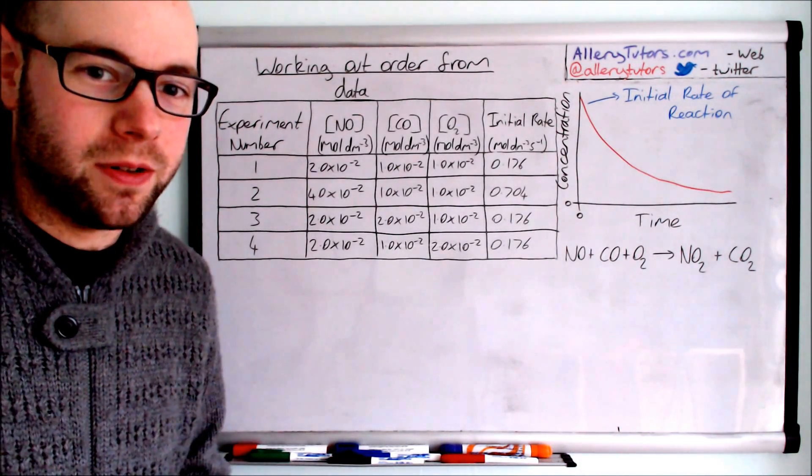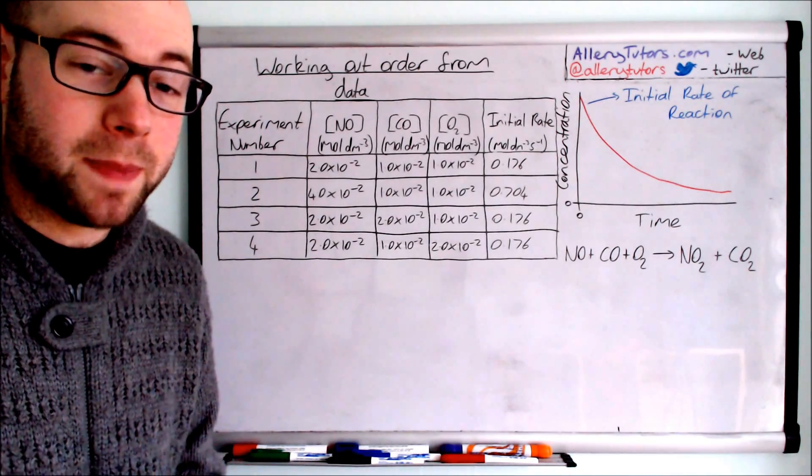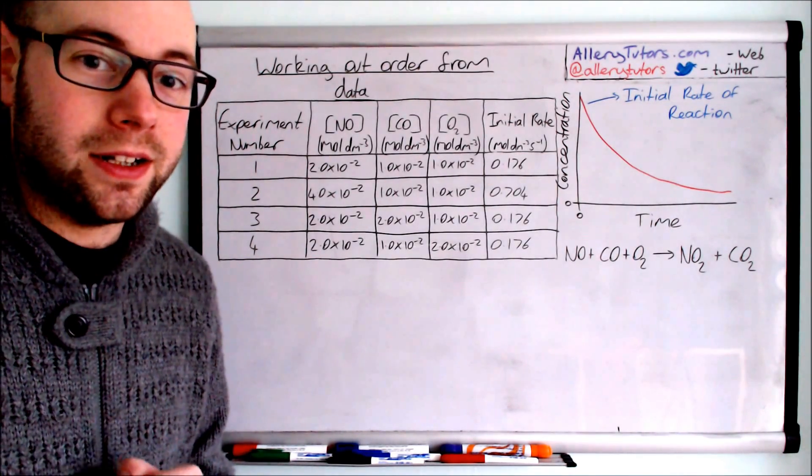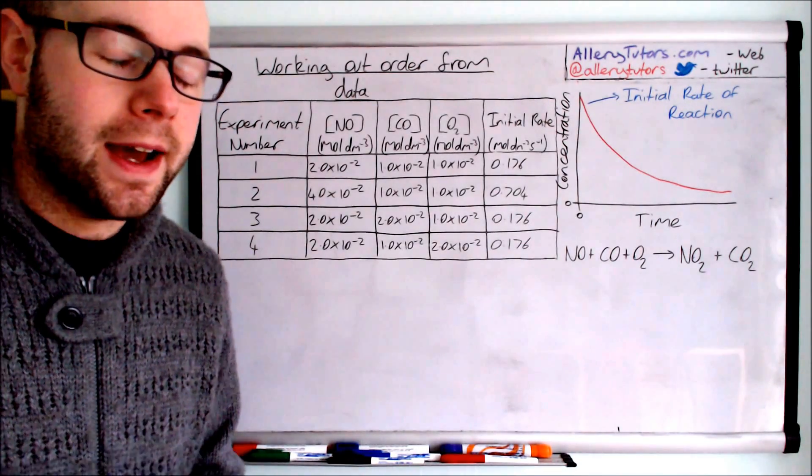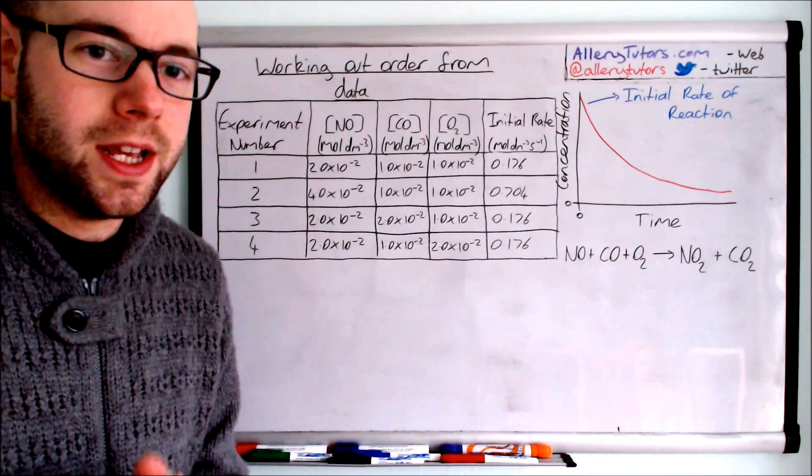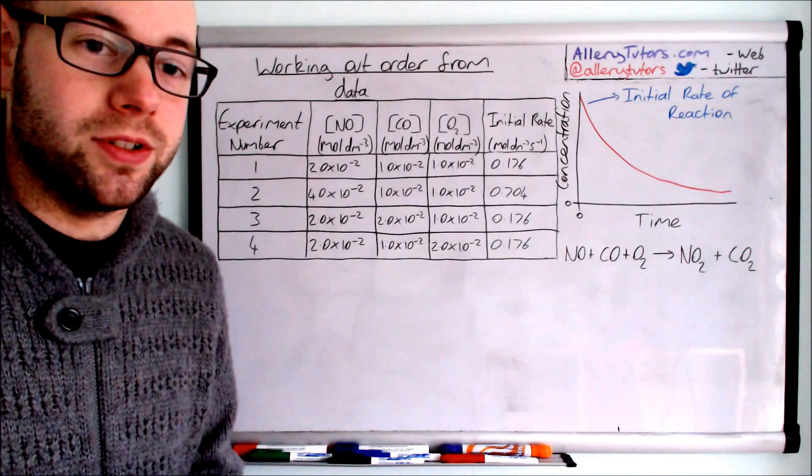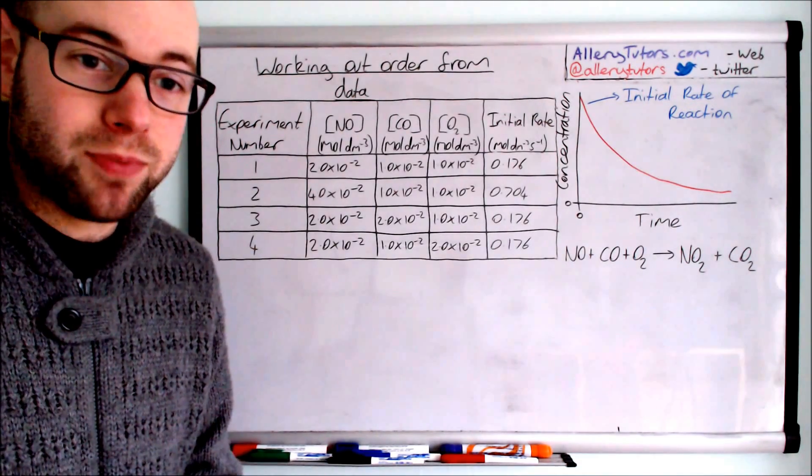In this video we're going to look at a set of experimental data and how the concentration of reactants or changing the concentration of reactants has an effect on the initial rate, and then from that we're actually going to deduce the rate expression.